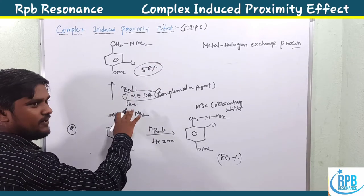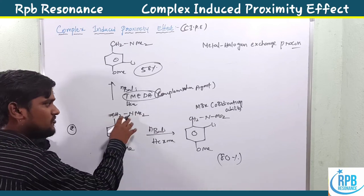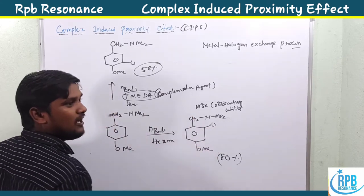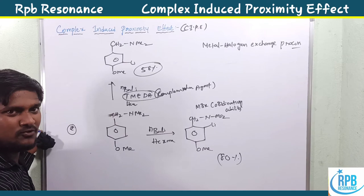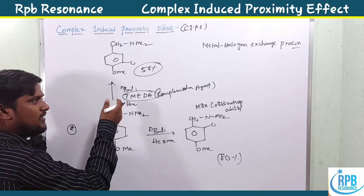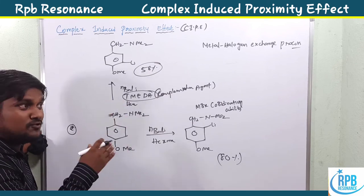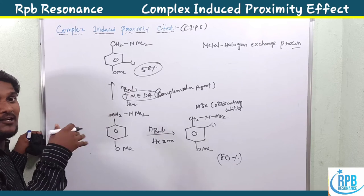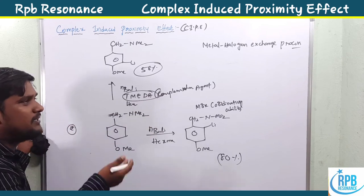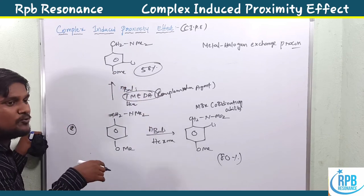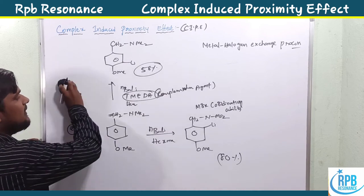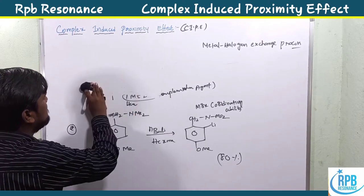So when nitrogen and oxygen containing groups are both present, treating with n-butyl lithium generally gives ortho-metalation with respect to nitrogen due to its greater coordinating ability. But when TMEDA is used as a complexating agent — which chelates the groups — it directs the ortho position with respect to oxygen. These two are the simple exceptions in CIPE.